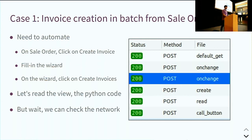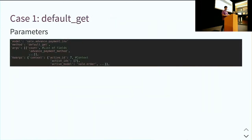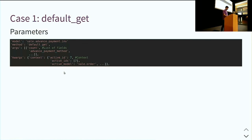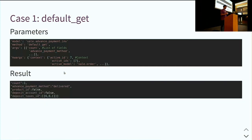Let's look at each in detail. The default_get: always the model and the method. The argument is the list of fields for which you want the default value, and of course you have the context. Since you are dealing with a wizard, the active_id is really important, so we'll have to take care of that. As a result, you get the list of fields with their default values, which we'll be able to use for the create call.